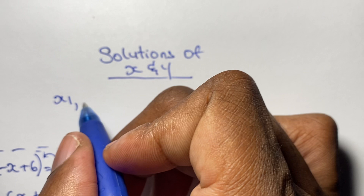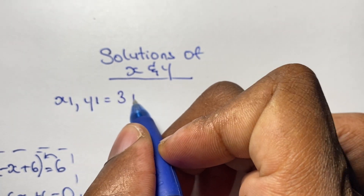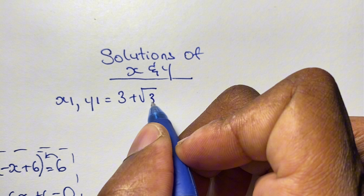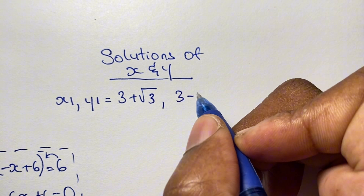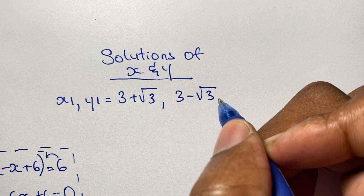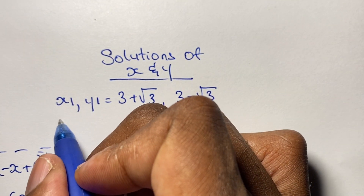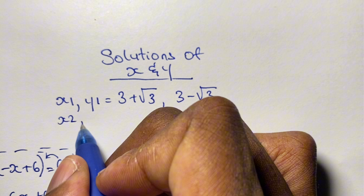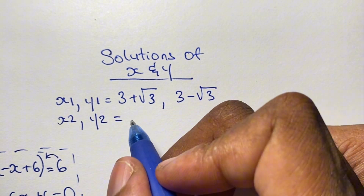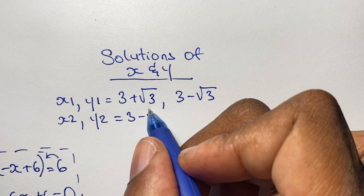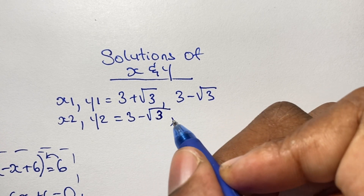Let us look at our solutions. The first pair (x₁, y₁) is 3 plus the square root of 3, and 3 minus the square root of 3. The second pair (x₂, y₂) is 3 minus the square root of 3, and 3 plus the square root of 3.